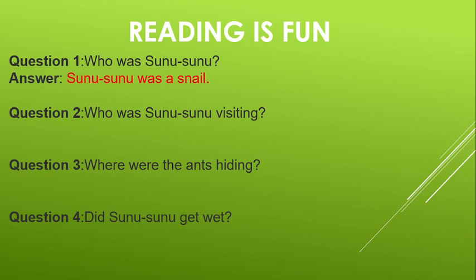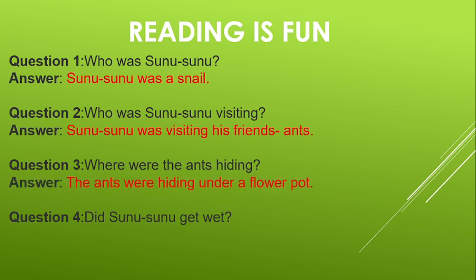Question number three: Where were the ants hiding? Jo cheetiyan thi woh kahan chhup gayi thi? Answer: The ants were hiding under a flower pot. Ek gumle ke niche chhup gayi thi.